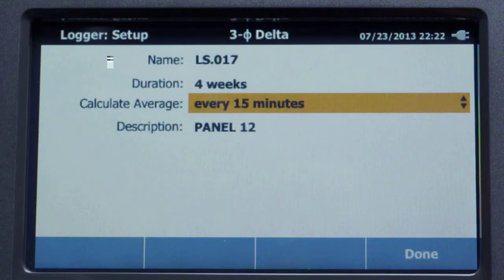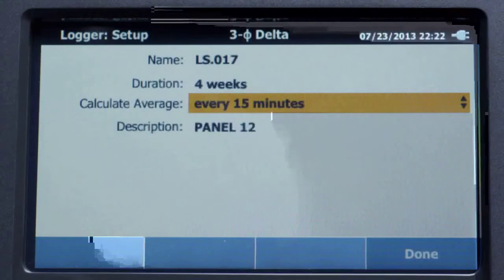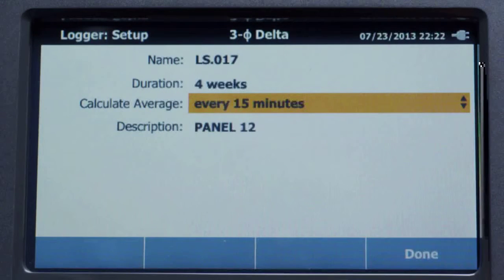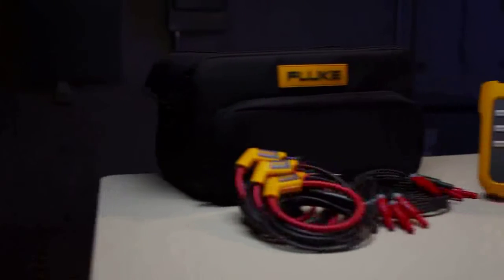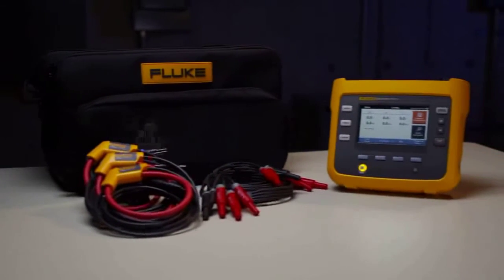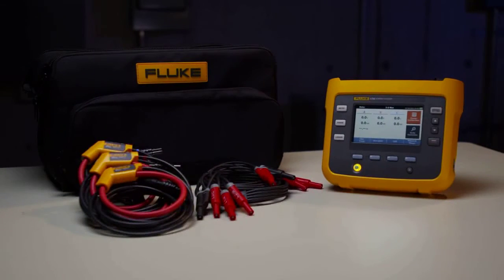The file name for your log data is automatically generated. In this example, it's LS.017. Energy and cost reduction opportunities are there. Find them with the Fluke 1730 Energy Logger.